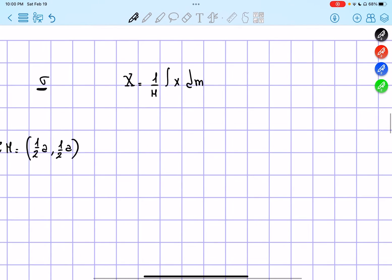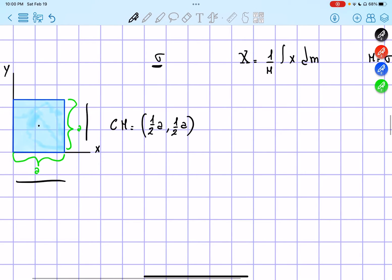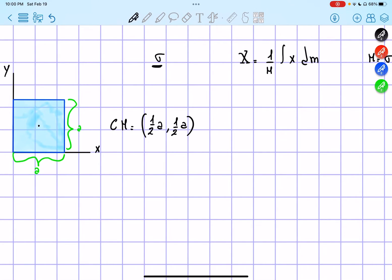So, now we have to find what is, first of all, capital M. Capital M is going to be equals to the surface area times the area, and the area of the square is going to be equals to a squared, because of course, one side is a, the other side is a as well.